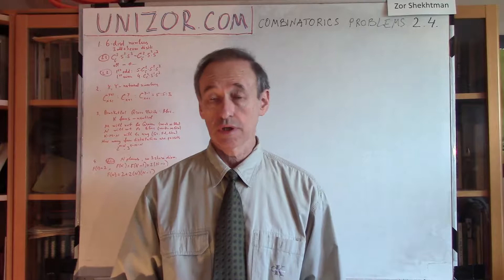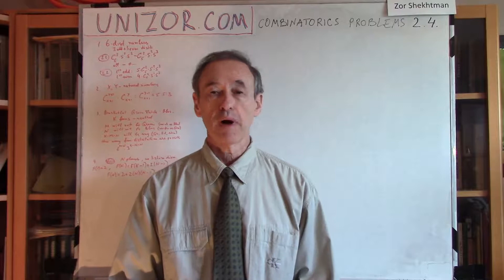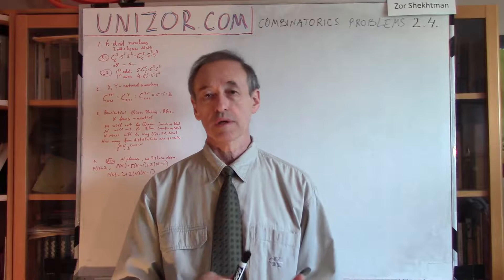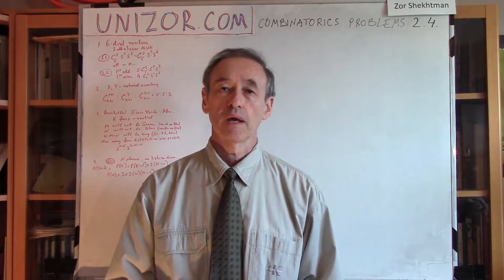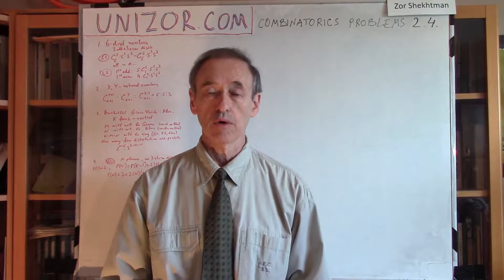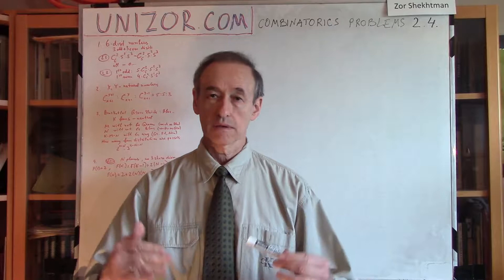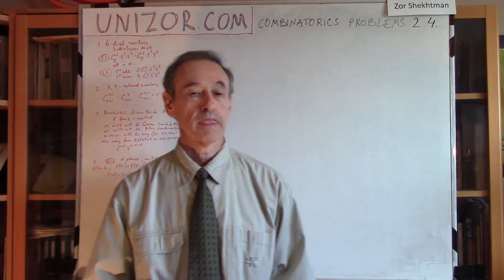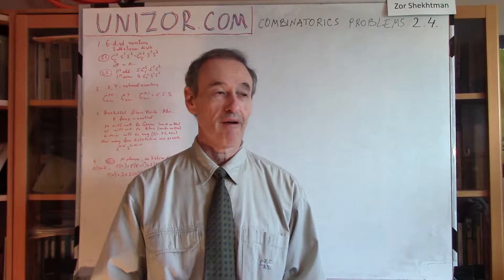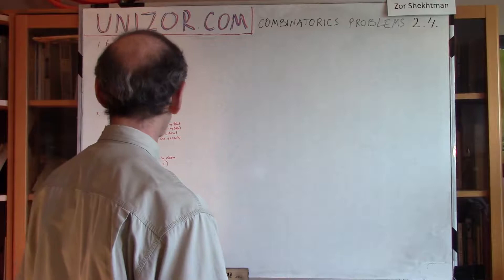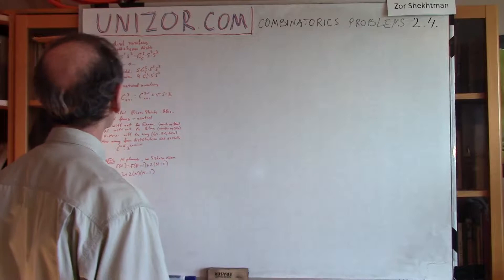Hi, I'm Zor. Welcome to Unizor Education. This lecture is a continuation of solving combinatorial problems. It's part of the advanced mathematics course for teenagers, which is presented on unizor.com — exactly where I suggest you view this lecture, because it contains notes as well as the video itself. The notes contain the same problems with answers, so you can solve them yourself, check against the answer, and then see the explanation. These problems are not about playing cards or poker like the previous two lectures — these are four completely random combinatorics problems. Let's start.